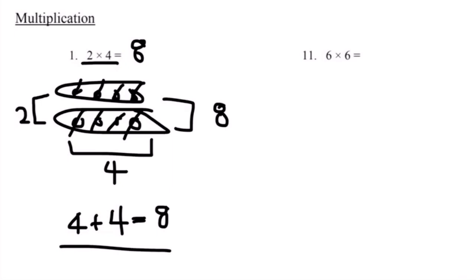Number 11, 6 times 6. Since this is a bigger number, let's draw it out. We have six groups of six circles.